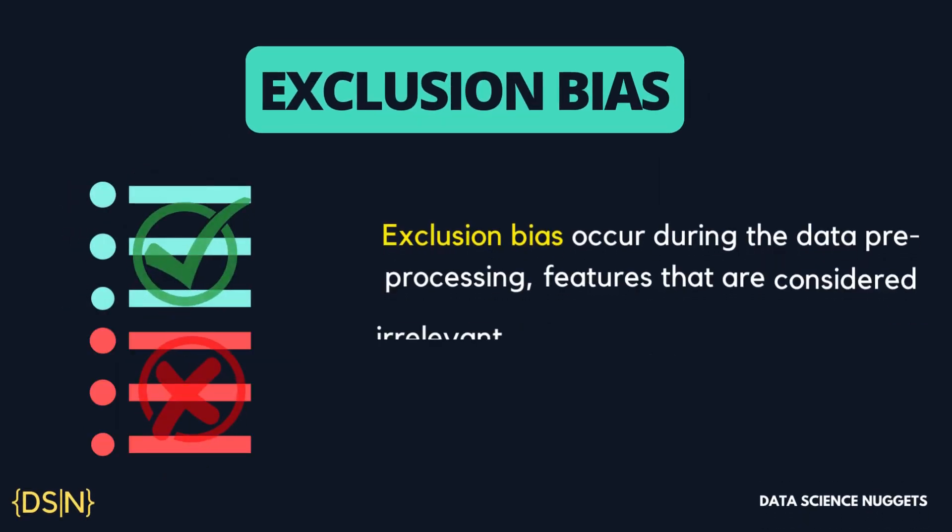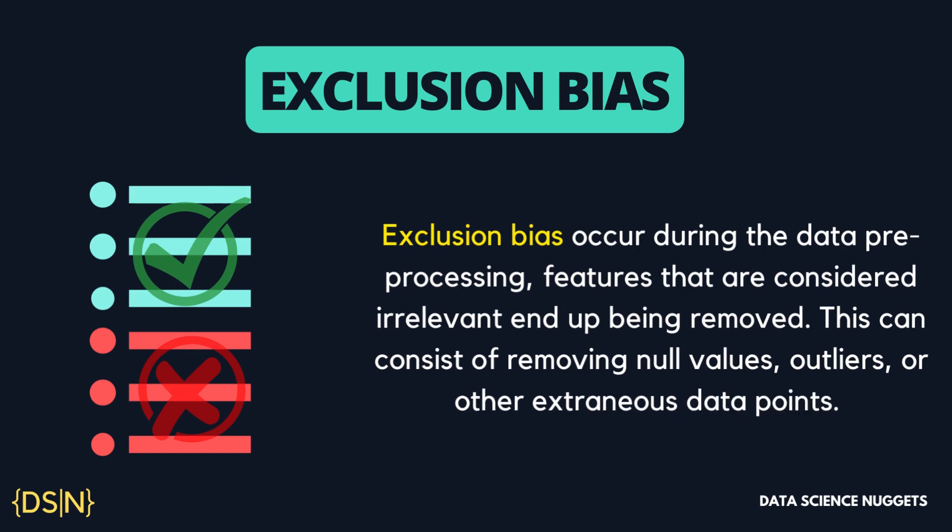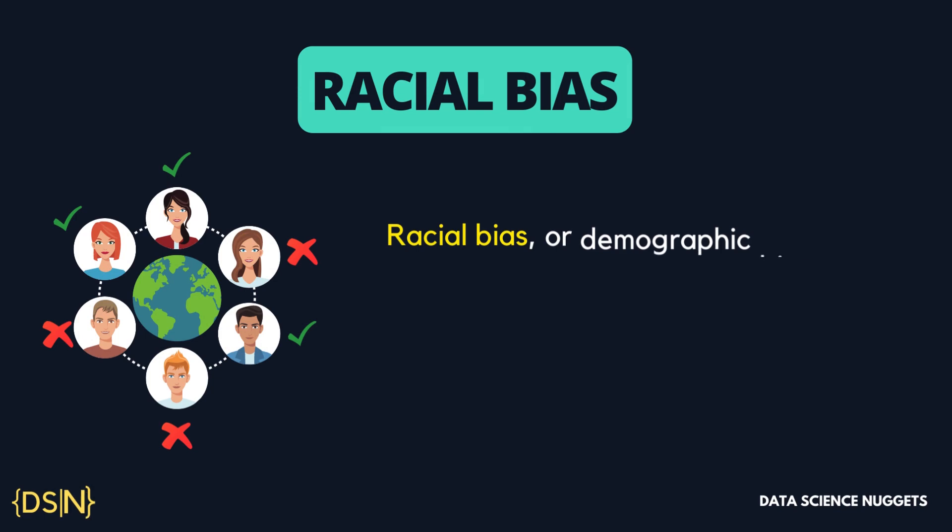Next is exclusion bias. During data preprocessing, features considered irrelevant end up being removed. This can lead to underrepresentation when the data is applied to a real-world problem, as the removed features may end up being underrepresented, resulting in the loss of true accuracy of the collected data. For example, imagine referral rates from English and Chinese versions of a website are being compared. If 98% of clicks come from the English version and 2% from the Chinese version, one might leave out the 2%, thinking it won't affect the final analysis — but doing so, one may miss that Chinese clicks have a higher conversion rate, leading to exclusion bias and an inaccurate representation of the data.